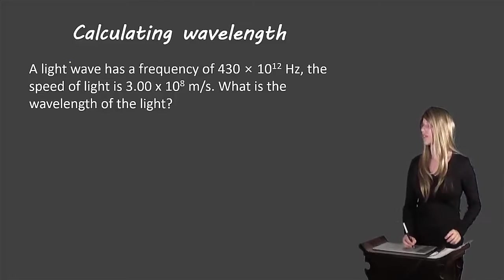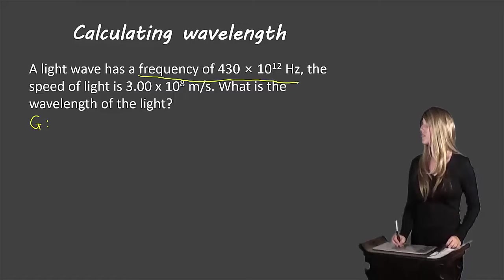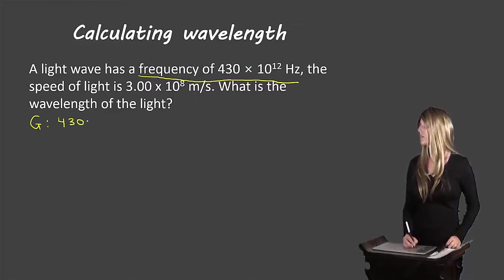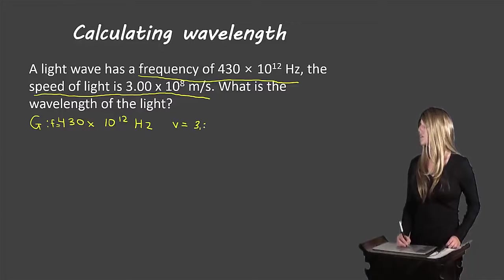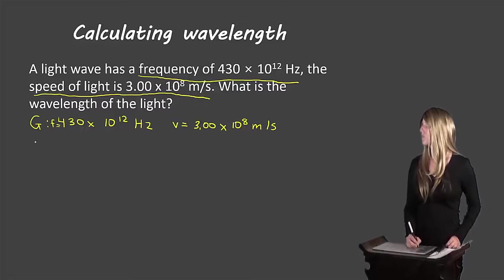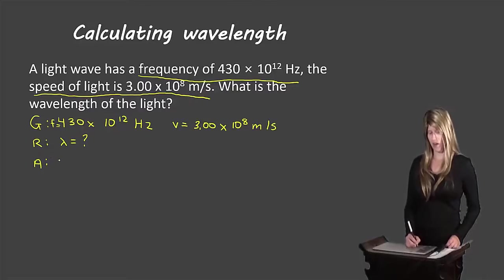G represents the givens. The frequency is 430 times 10 to the 12 hertz, and the speed of light is 3.00 times 10 to the 8 meters per second. R stands for required — what do we need to know? The wavelength equals question mark. A stands for analysis — this is where we write our formula: V equals F times lambda.